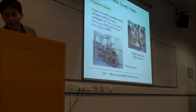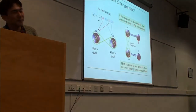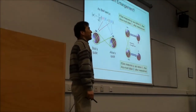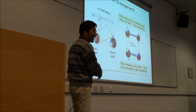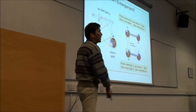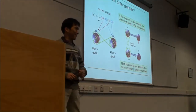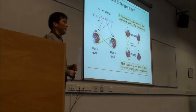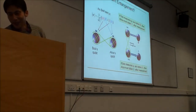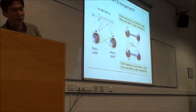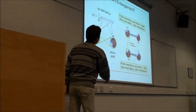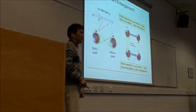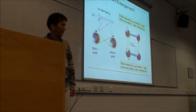An interesting question about entanglement: if you have n qubits, are they all entangled? Yes — if you manipulate seven qubits, they're all entangled. The entanglement extends to all. For example, if you have three qubits, you can have a state like 000 plus 111.